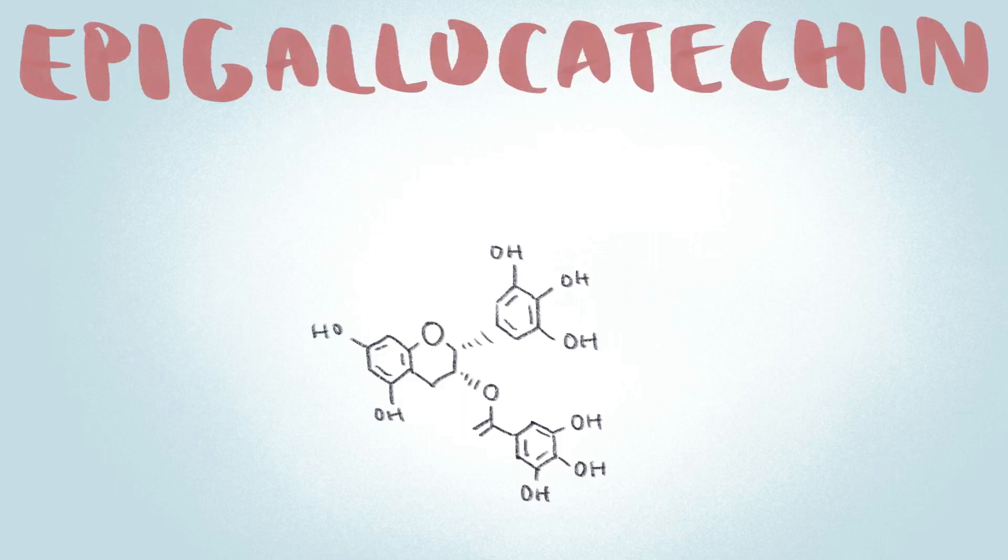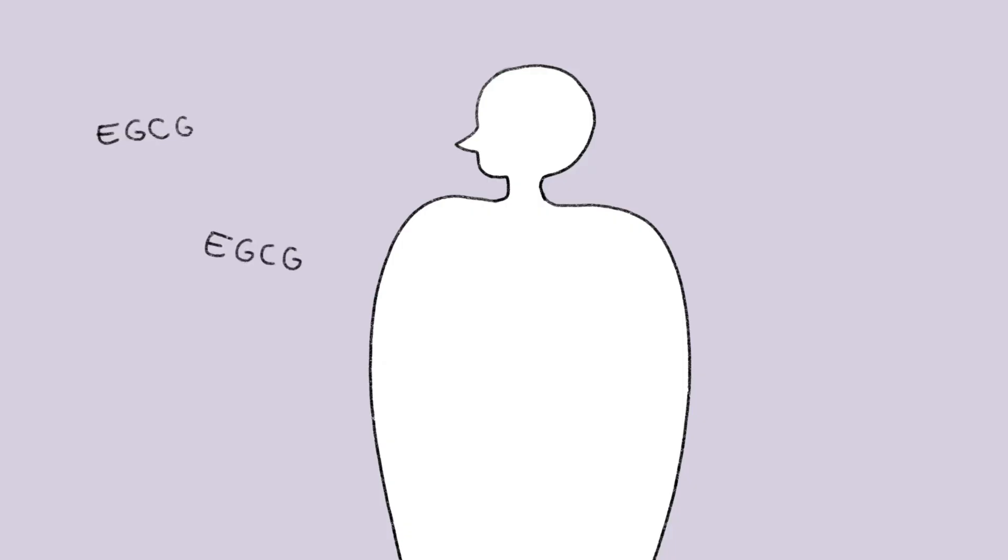One of these is epigallocatechin gallate, or EGCG, which is a catechin, an antioxidant that reduces the formation of free radicals to prevent cell damage in the body.